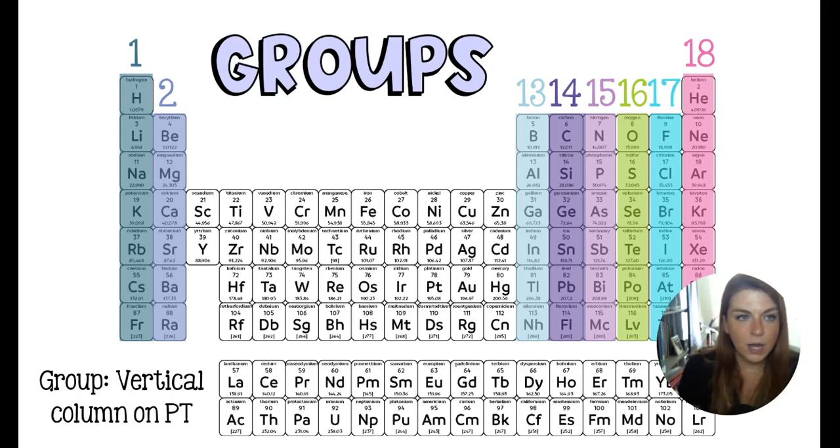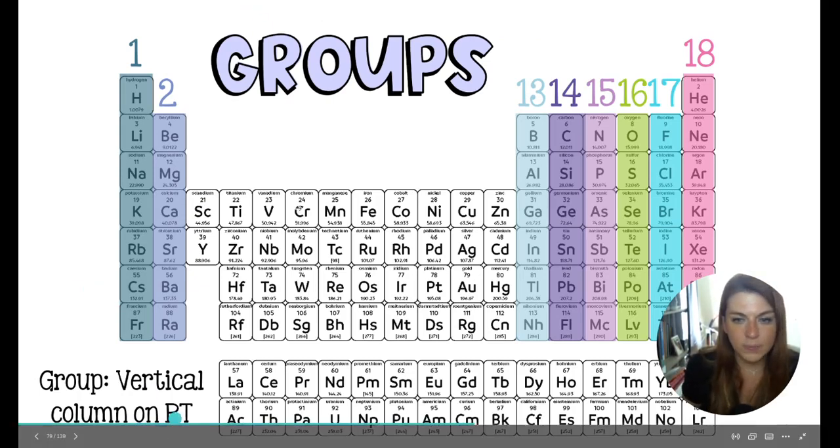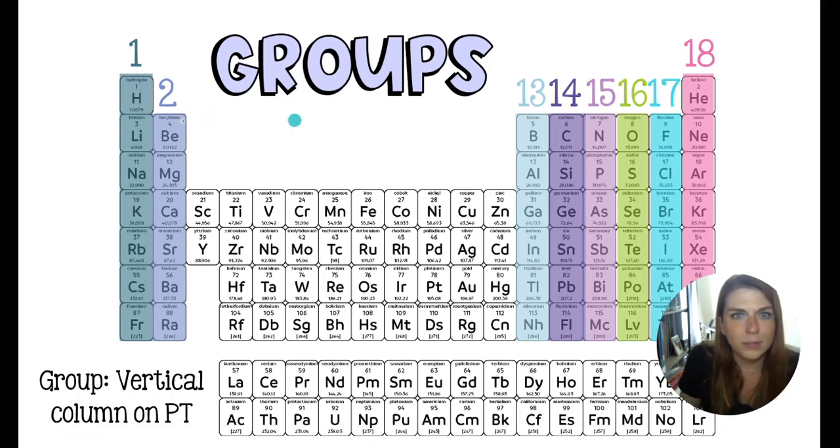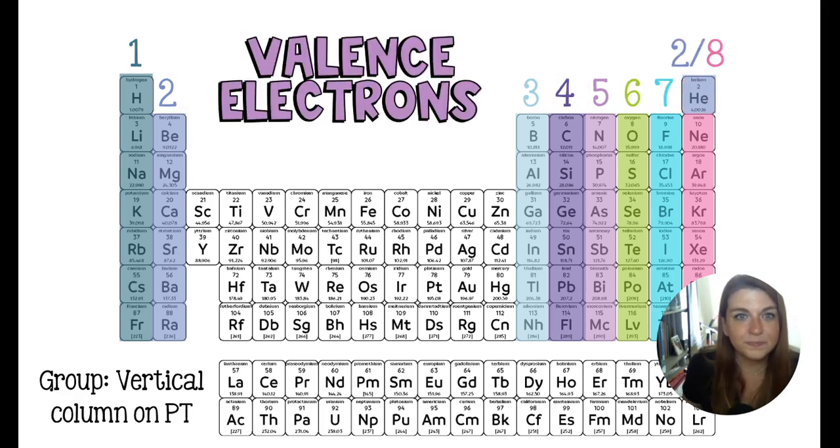So looking at the groups, a group is just a vertical column on the periodic table. They kind of go in order. They're numbered. There's 18 of them. This is 3 through 10. I'm not talking about those right now. I'm talking about the tall towers. So we have 1 and 2, and then 13, 14, 15, 16, 17, and then 18 headed by helium. These guys play very nicely by the rules. The rule is the number of valence electrons that they have in their atoms.